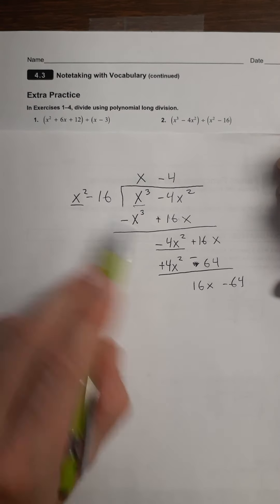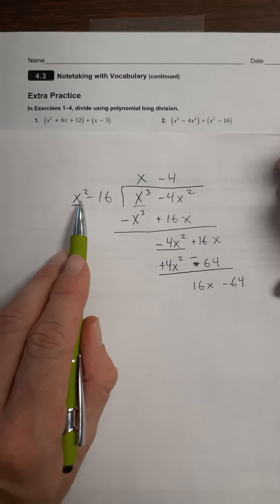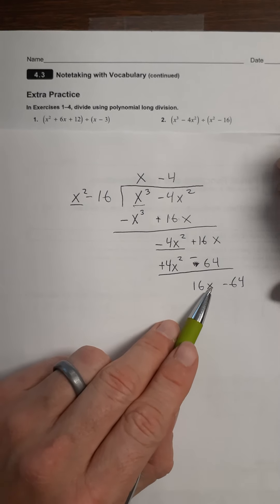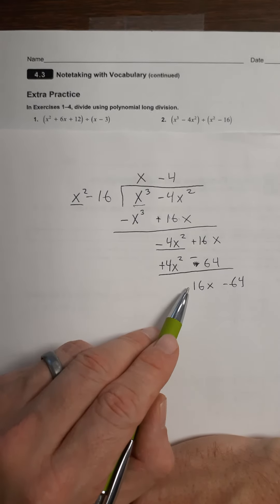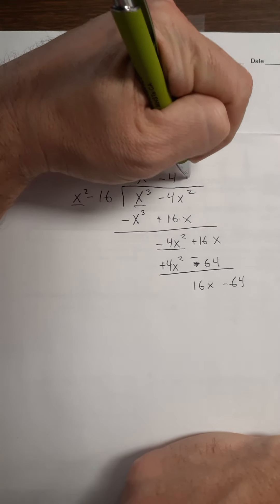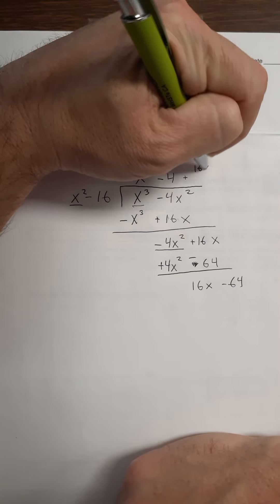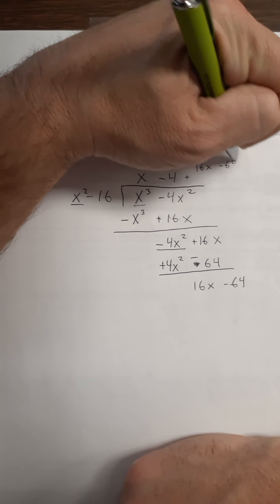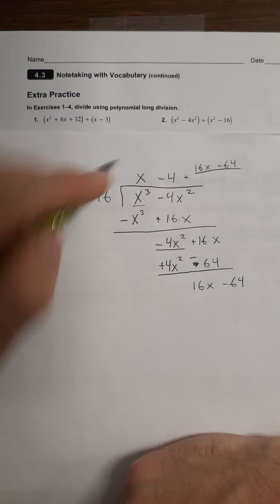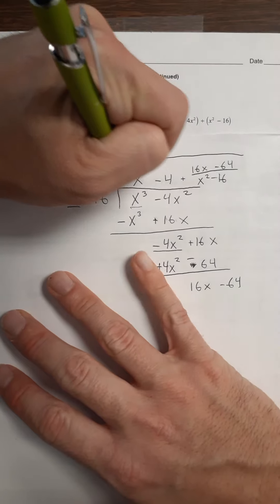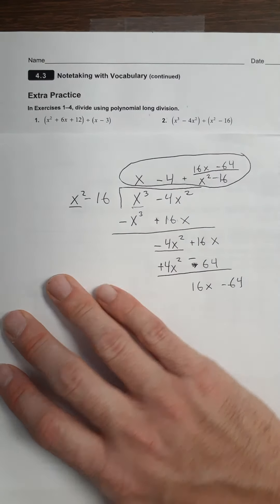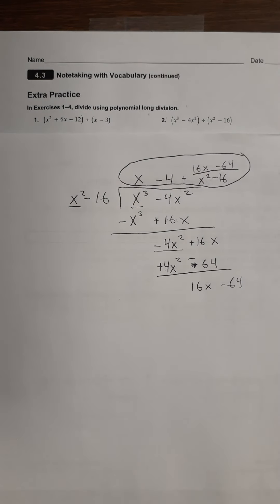What do I have to multiply this by to get it to that? That's not going to work because this degree is higher than this degree. So at this point, we now just write the rest as a remainder. So it's going to be plus 16x minus 64 divided by x squared minus 16. There's our answer. We've just done polynomial division, polynomial long division once again.